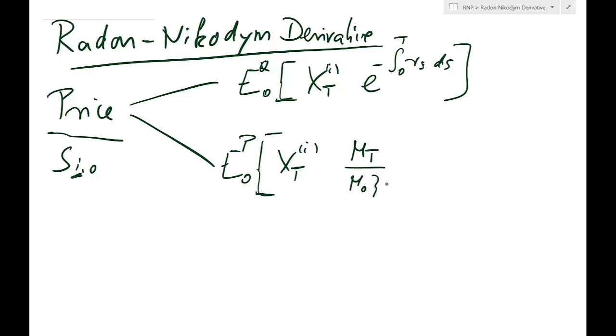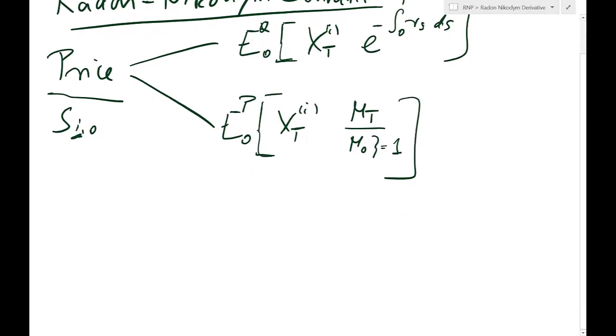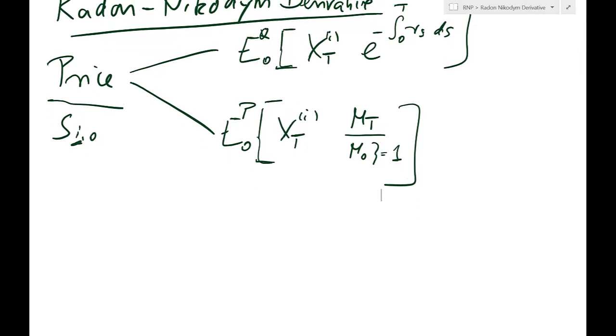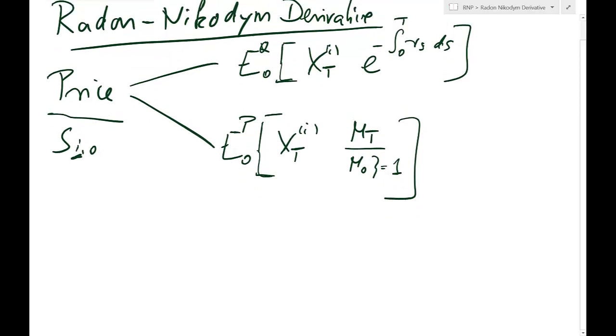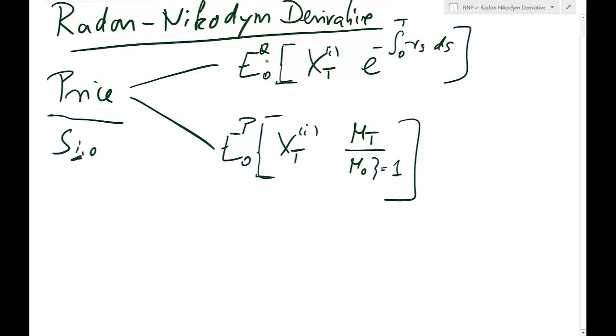Keep in mind by definition of an SDF, M0 is just one. Now since these two expectations have to be the same, we can now think about what's the relationship between these two probabilities. And the relationship, if we take the ratio of one of these probabilities relative to the other, that would be the Radon-Nikodym derivative. So let's just do that.